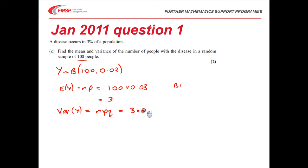The variance for the binomial is NPQ. We've already calculated NP, so we can just get away with multiplying it by 0.97, which is then going to give me a second B1 mark.